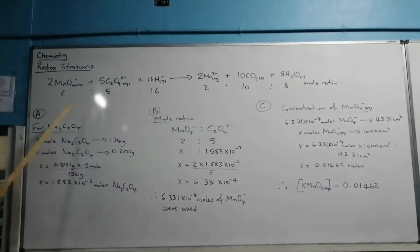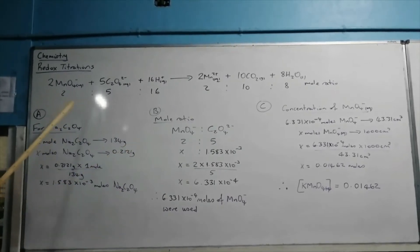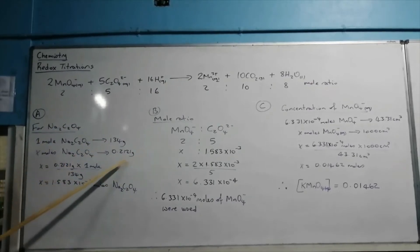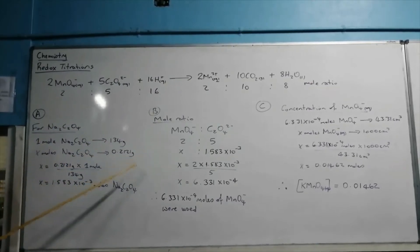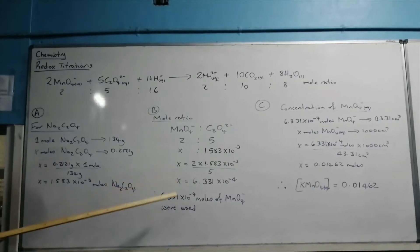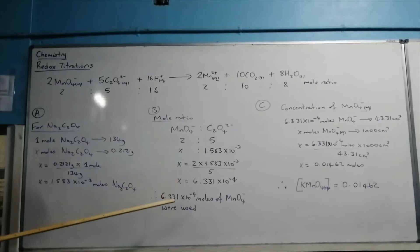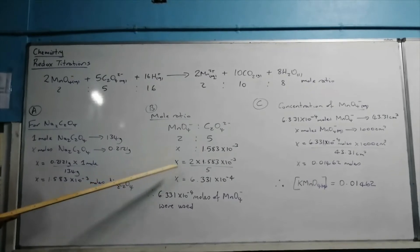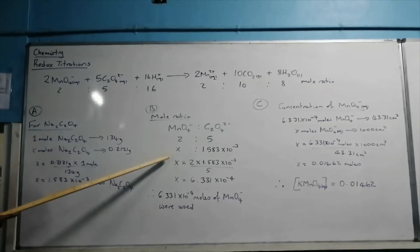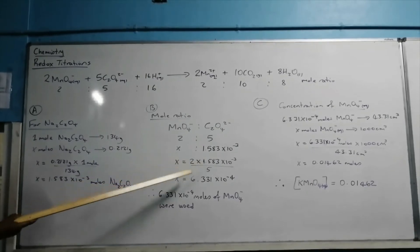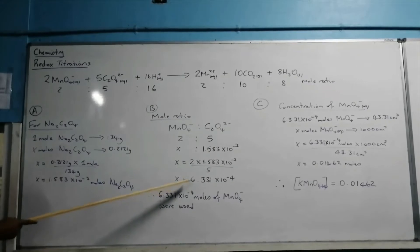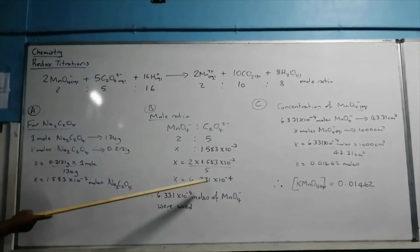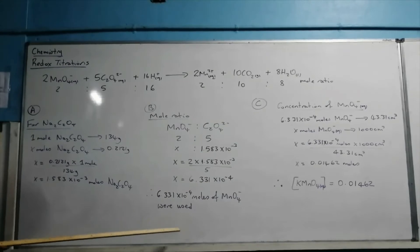Looking at the mole ratio between the ions in the balanced ion equation, it's a 2 to 5 mole ratio. We have 1.583 × 10⁻³ moles of sodium oxalate, and we want to find the number of moles of permanganate ions present. Cross multiplying gives us 6.331 × 10⁻⁴ moles.